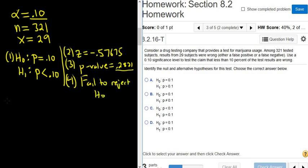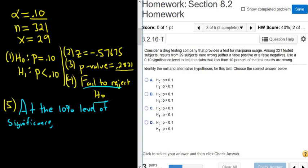And then step 5 is going to be our interpretation. So we always start our interpretations by mentioning the level of significance. So in this case, we have .10, so we start by saying at the 10% level of significance. And we have to decide if there is or there is not sufficient evidence to support our claim. So in this case, we fail to reject H0, so there is not enough evidence to support H1.